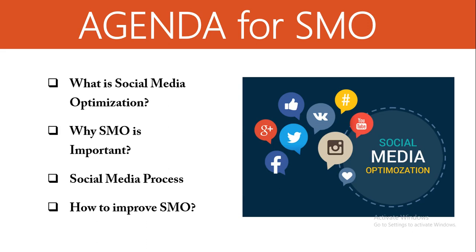Firstly, today we will be discussing about what is social media optimization — covering the definition of social media optimization. Second is why social media optimization is important. Third is the social media process — there is a process for optimizing your social media. And last is how to improve SMO, where you can understand how SMO can be improved.